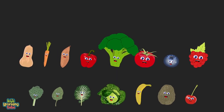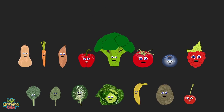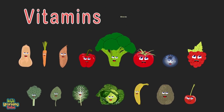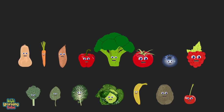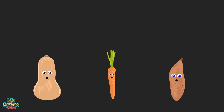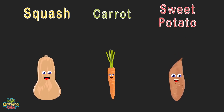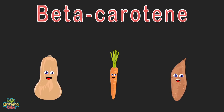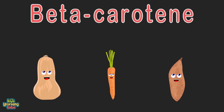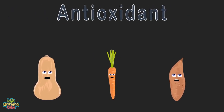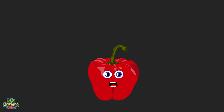We supply the nutrients your body needs — if you don't eat us every day then you won't function properly. Vitamins and minerals will keep you from fatigue. We're three pieces of produce full of beta carotene: squash, carrot, and sweet potato. Beta carotene is a red-orange pigment found in fruits and plants — it converts to vitamin A, an essential vitamin. Beta carotene is also an antioxidant that slows damage to cells.